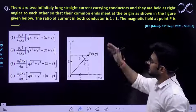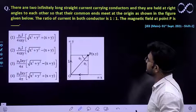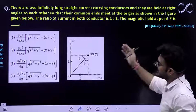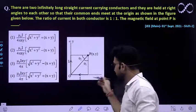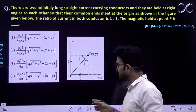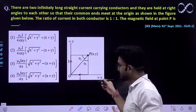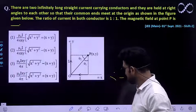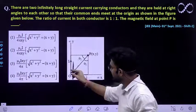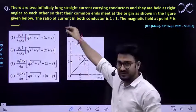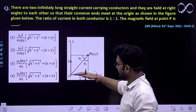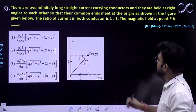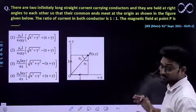The question says there are two infinitely long straight current-carrying conductors and they are held at a right angle to each other. So you have been given two infinitely long current-carrying conductors — this is one conductor which is infinitely long, and this one is the second conductor which is also infinitely long, and they are at 90 degrees to each other. This is the setup which is given to you.